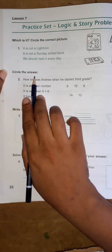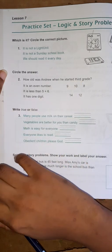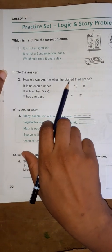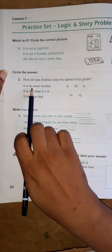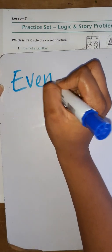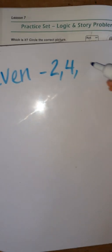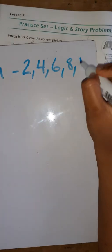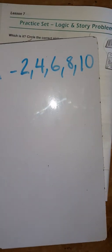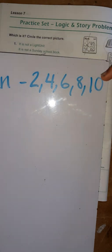Here you have circle the answer. How old was Andrew when he started third grade? It is an even number. Do you remember even and odd numbers? Even numbers are two, four, six, eight, and ten — any number that ends in two, four, six, eight, and zero.